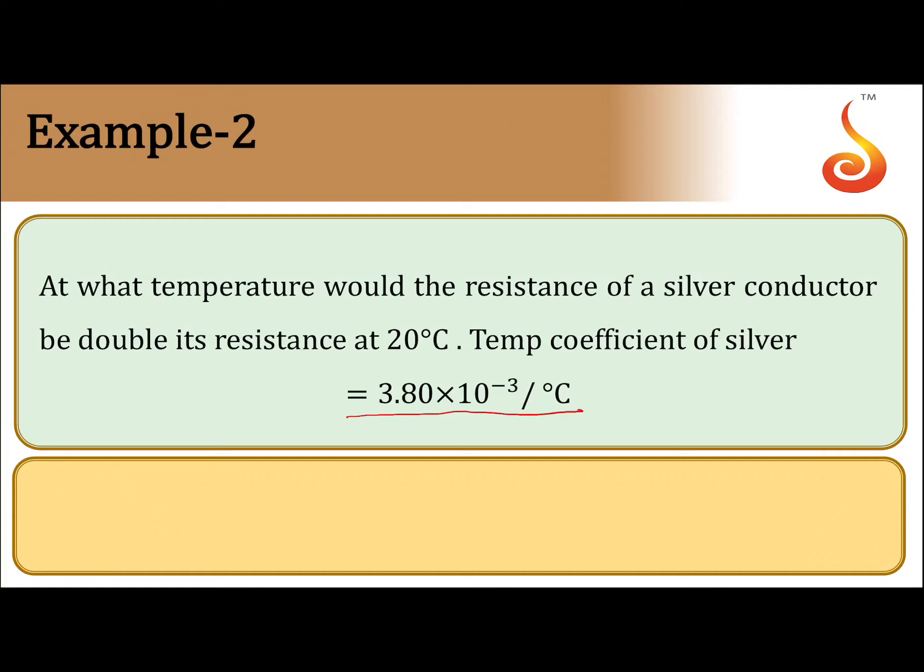This value is alpha, the alpha value is given. Temperature T1 is given. At this temperature, let the resistance be R. It should become double its resistance by rising temperature, so the final resistance should be 2R.